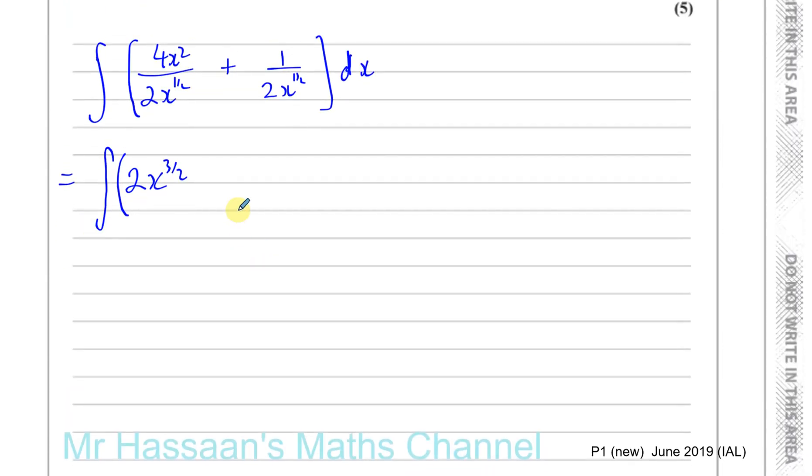Okay, plus, now for this one you've got to be really careful. A lot of people make the mistake of saying, ah, this is going to be 2x to the power of half minus half, and they'll write something like this, but this is wrong.